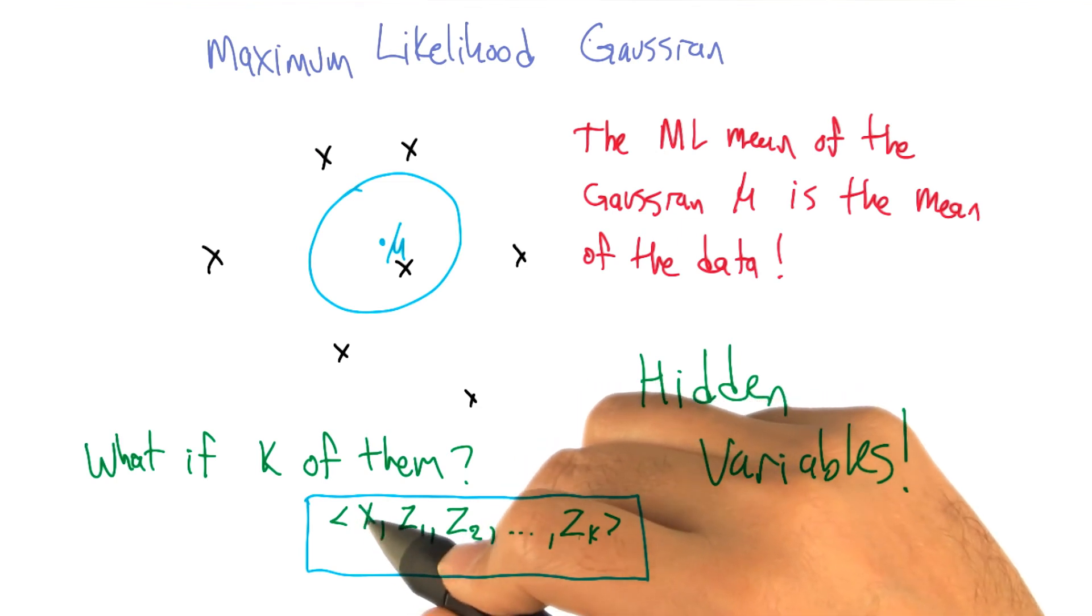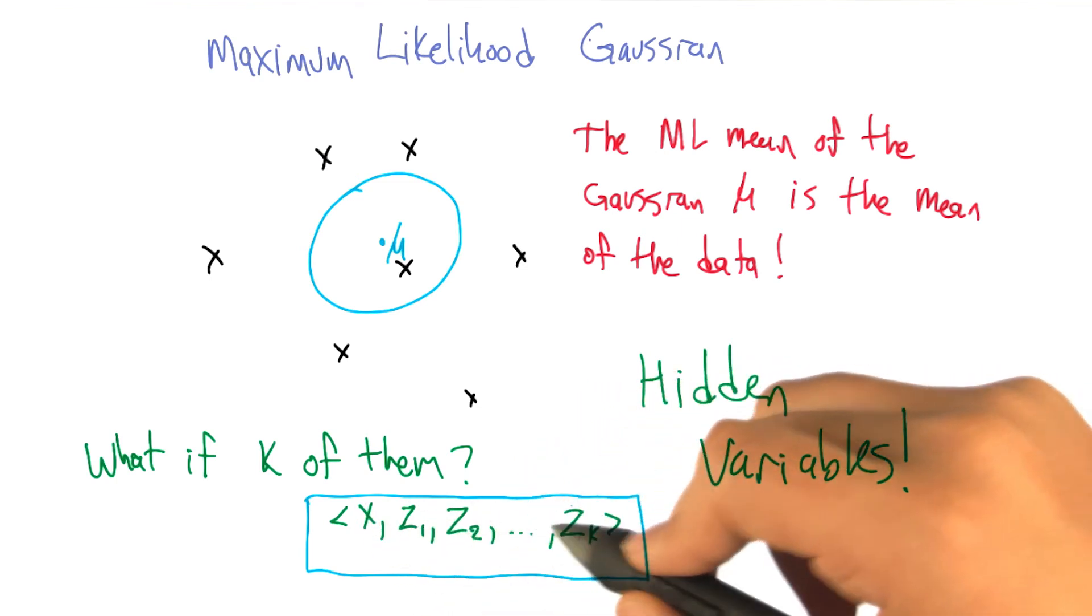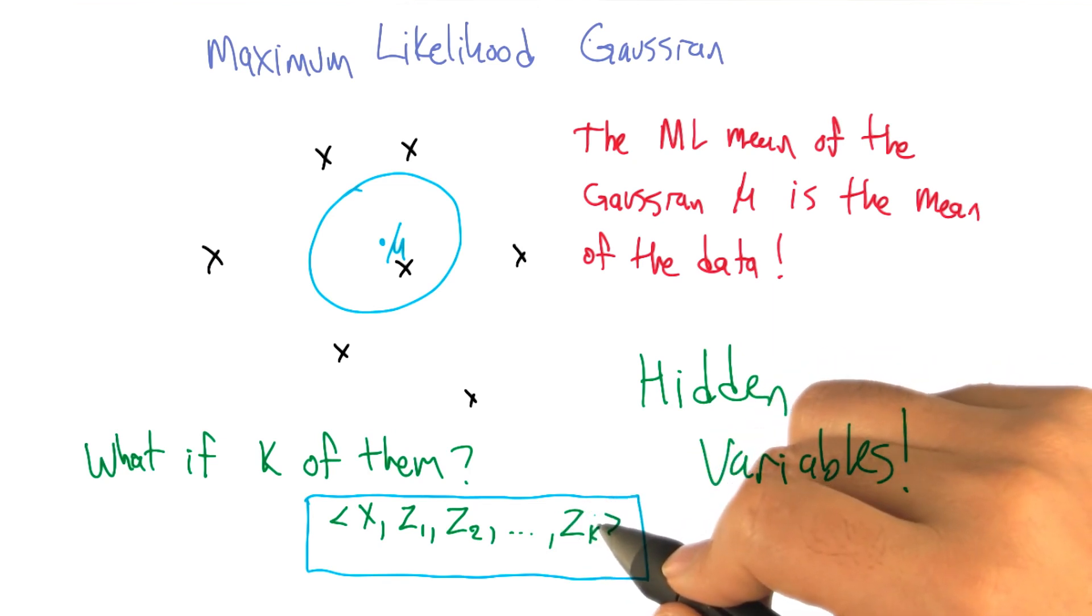So it's not just X anymore, it's X and, let's say, a bunch of zeros and then a one corresponding to which cluster generated X.